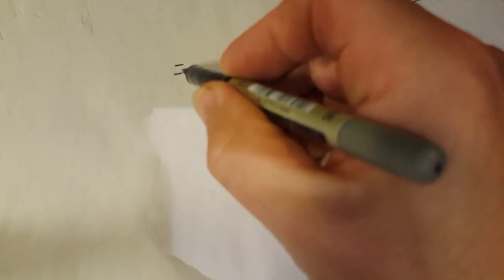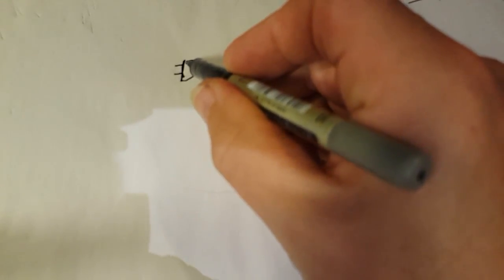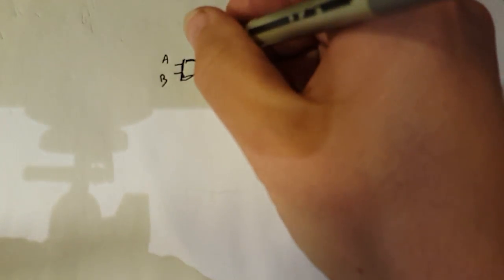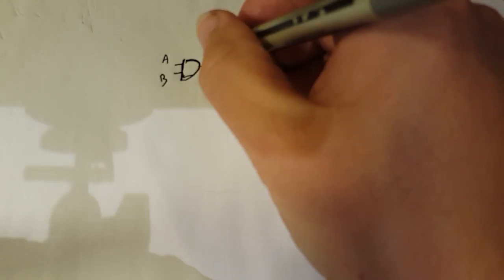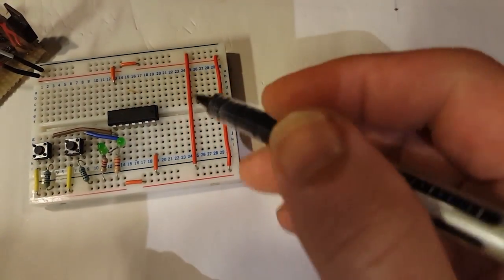The first one to talk about would be the AND gate. There's a symbol for it — you'll have to excuse my poor drawing skills — but this is an AND gate. You have input A and input B, and then you have output Y. This is how it's shown in the TTL book.